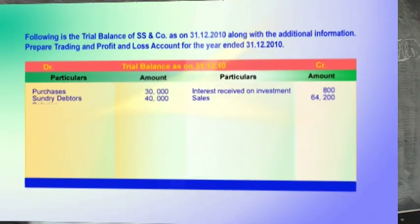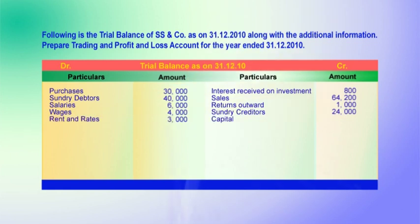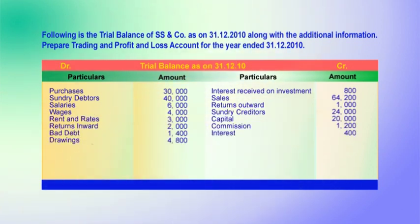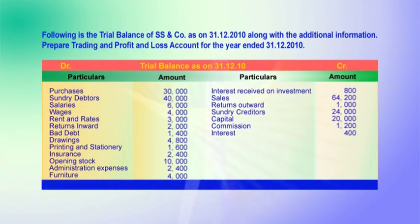Next items on the debit side: salaries 6,000; wages 4,000; rent 3,000. Then returns — suppose we purchase goods for rupees 10,000 on credit from a particular party, let us say AB company.